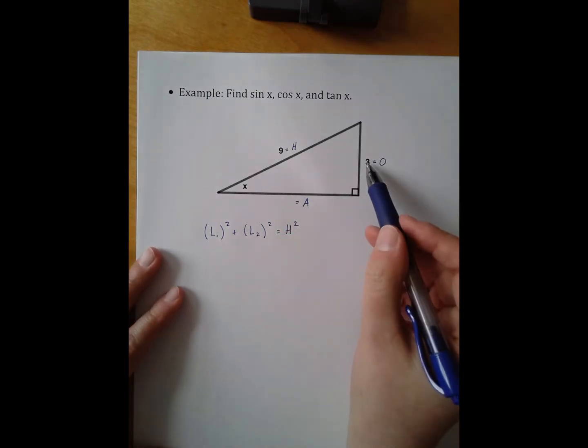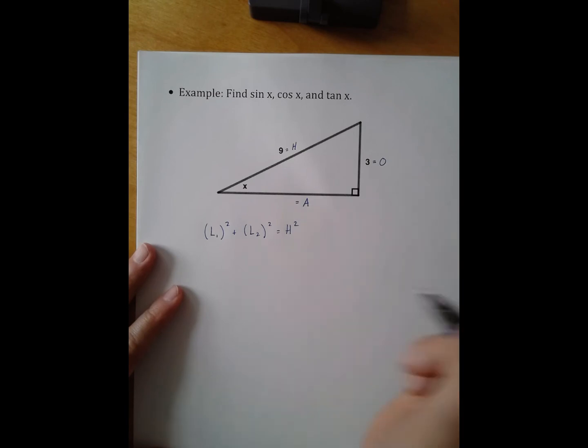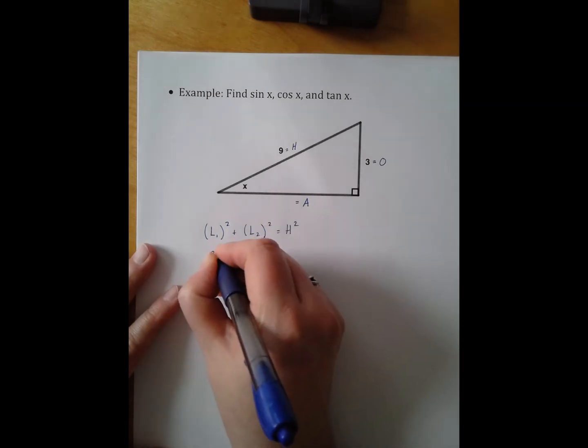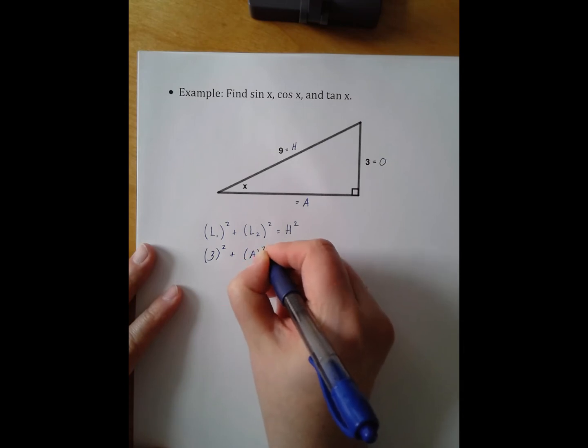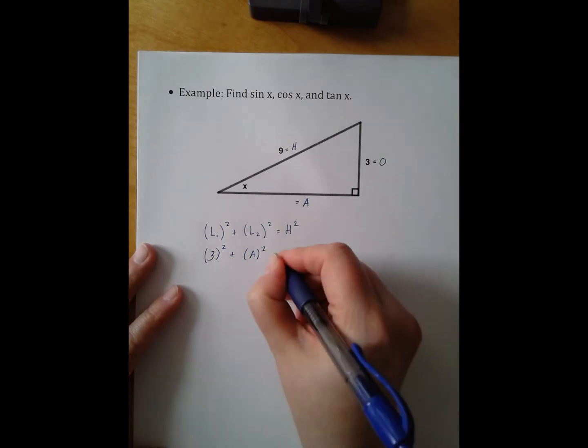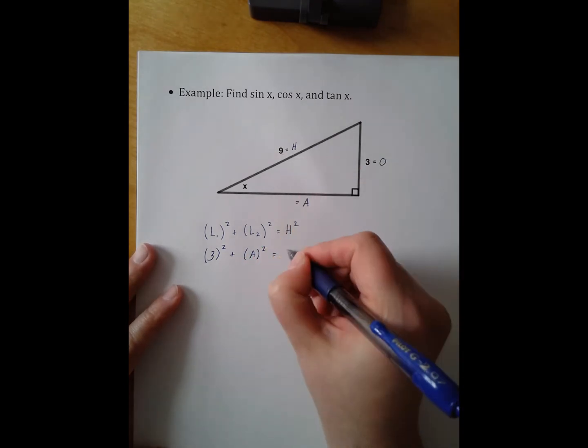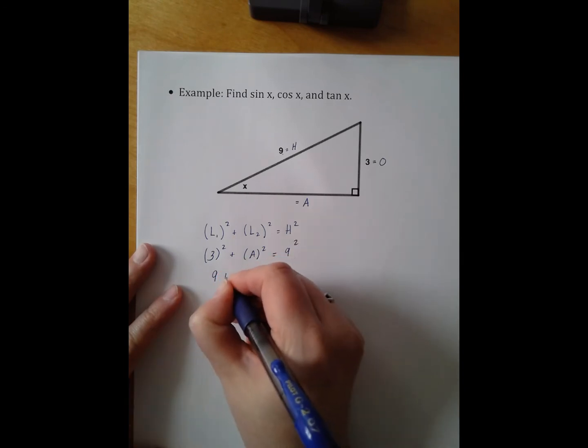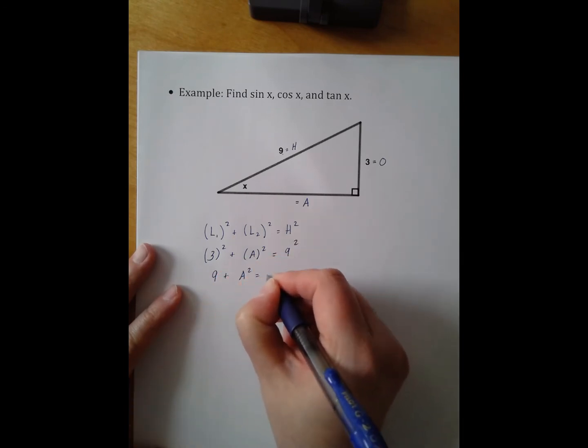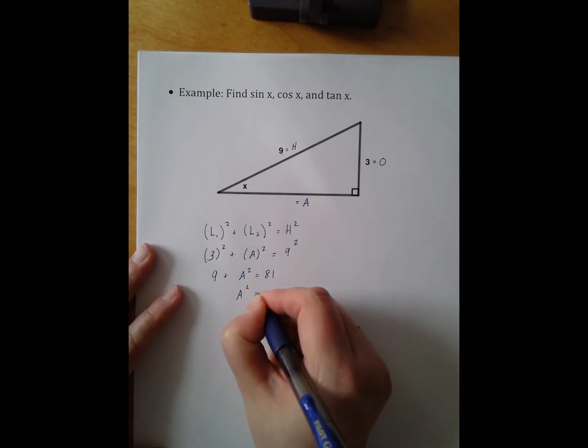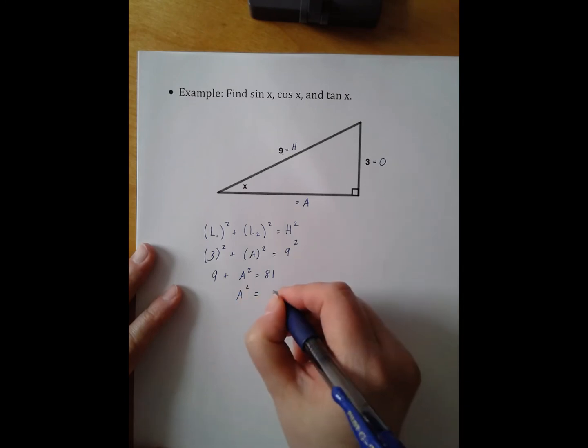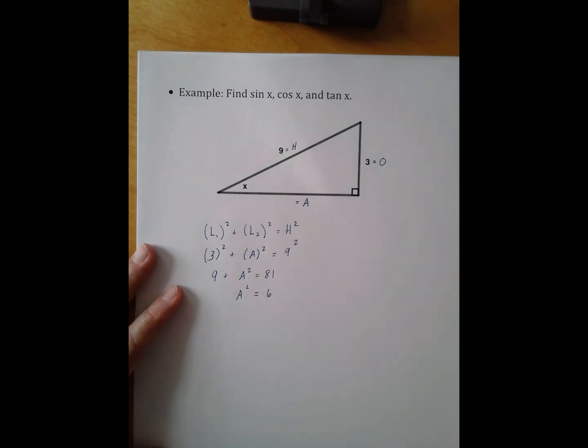In this case, my legs are three and some number I don't know. So I have three squared, we'll call that letter I don't know A, since it is the adjacent side, equals nine squared. Nine plus A squared equals 81. A squared equals 72.